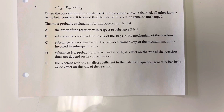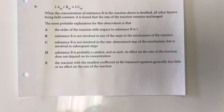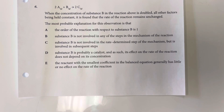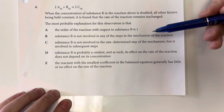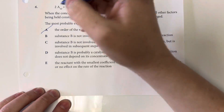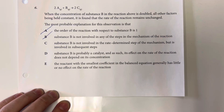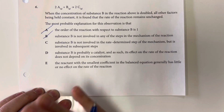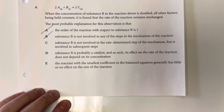When the concentration of substance B is doubled with all other factors held constant, the rate of reaction does not change, meaning B is a zero-order reaction — it does not affect the rate at all. Option A says B is first-order, which is not true; if it were first-order, doubling it would double the rate. Option C says B is not involved in any steps, which is also not true. Option D — that B is not involved in the rate-determining step but is involved in subsequent steps — is possible. It is also possible that B is simply zero-order.